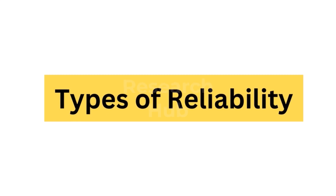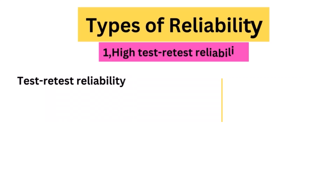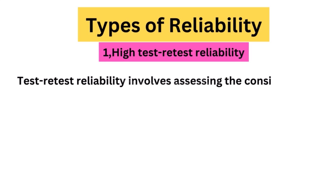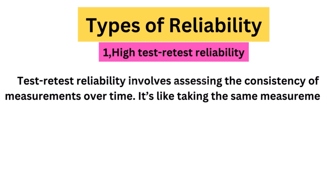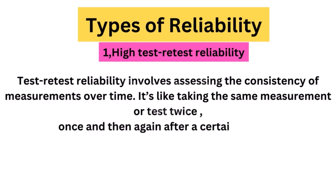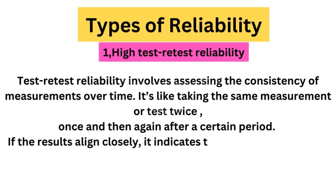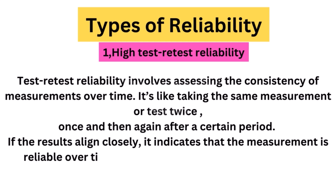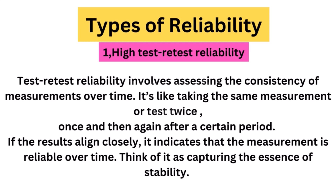Let's explore the various types of reliability that researchers consider to ensure their work stands on solid ground. Test-retest reliability involves assessing the consistency of measurements over time. It's like taking the same measurement or test twice — once and then again after a certain period. If the results align closely, it indicates that the measurement is reliable over time. Think of it as capturing the essence of stability.